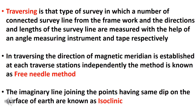The imaginary lines joining the points having the same dip on the surface of the Earth are known as isoclinic lines. It is important to understand the four terms: isoclinic, isogonic, agonic, and aclinic lines.